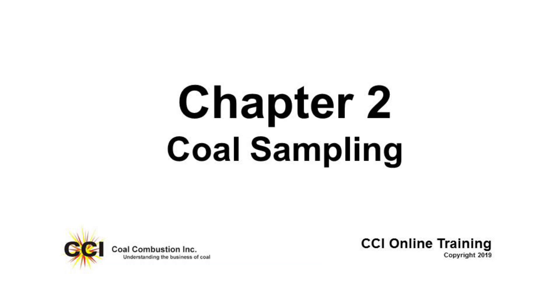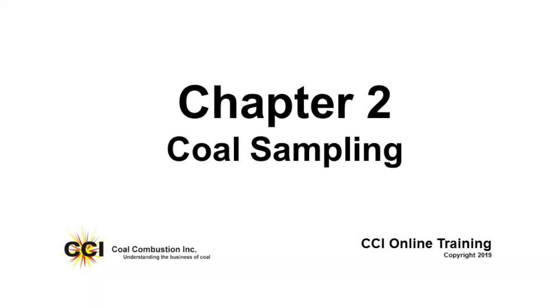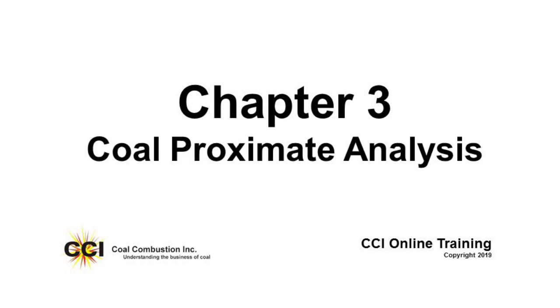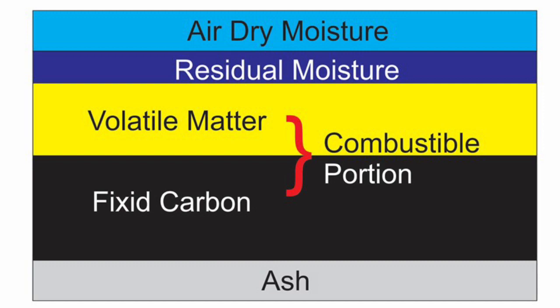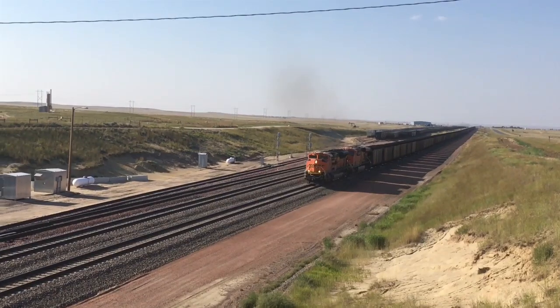In Chapter 2, we cover coal sampling. If you don't get a good sample, you can't rely on the results — so getting a proper sample is key to using coal quality results. In Chapter 3, we cover the proximate analysis, where we look at the dilutants such as ash and moisture, and the combustible material like volatiles and fixed carbon.